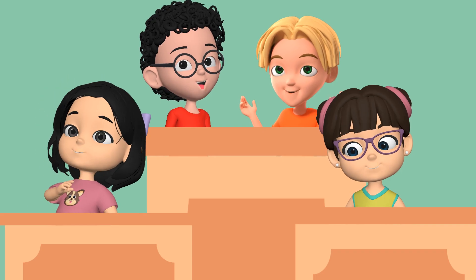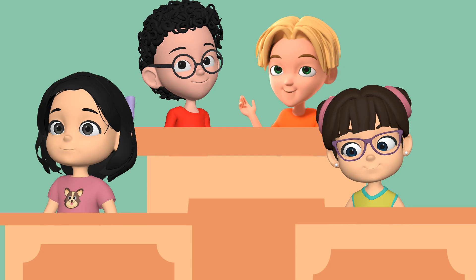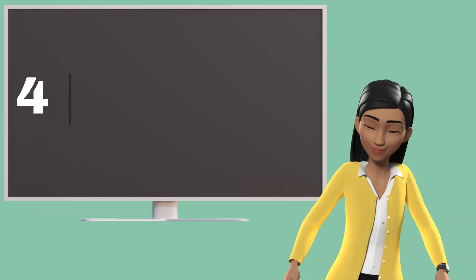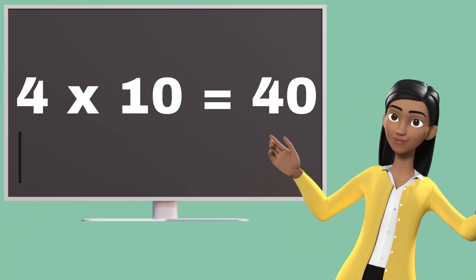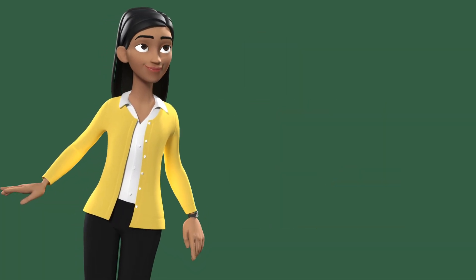Four eights are thirty-two. Four eights are thirty-two. Four nines are thirty-six. Four nines are thirty-six. Four tens are forty. Four tens are forty. Let's repeat it one more time.